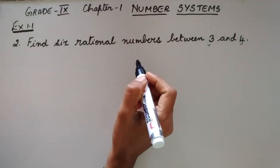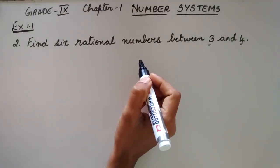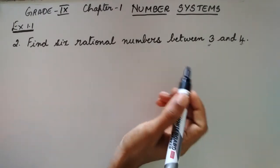There is another method to find rational numbers between any 2 numbers.